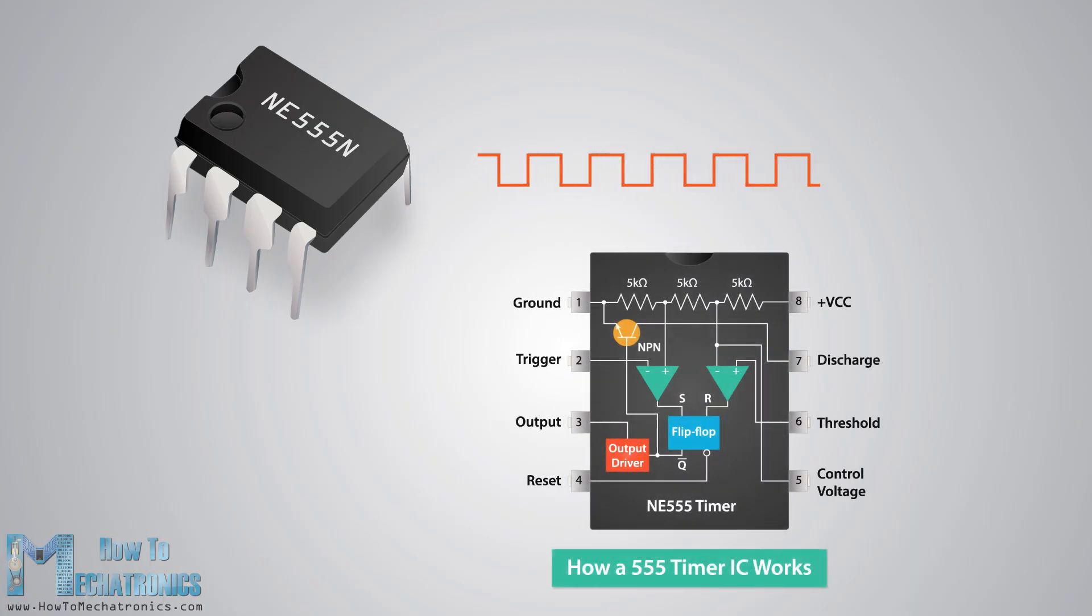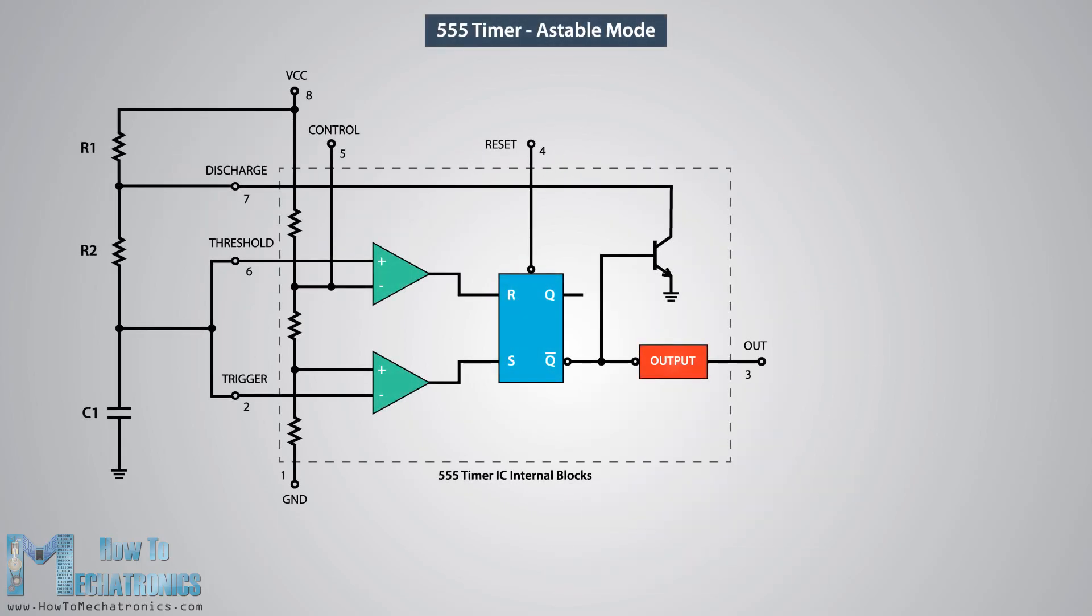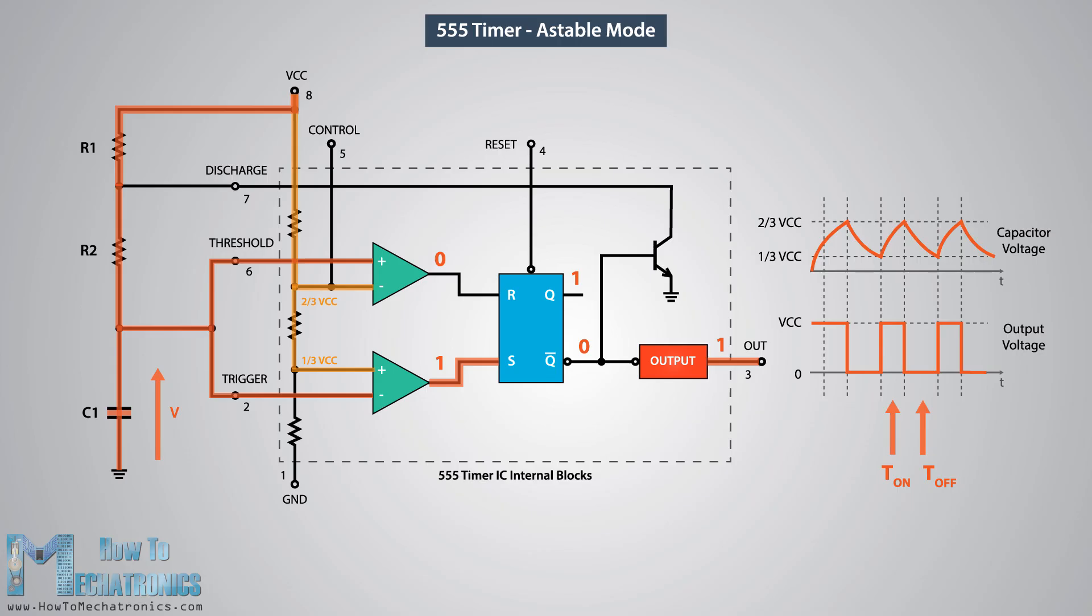If you are not familiar with the 555 timer, you can check my previous tutorial where I explained in detail what's inside and how the 555 timer IC works. Here's a basic circuit of the 555 timer operating in astable mode. We can notice that the output is high when capacitor C1 is charging through resistors R1 and R2. On the other hand, the output is low when capacitor C1 is discharging through only resistor R2.